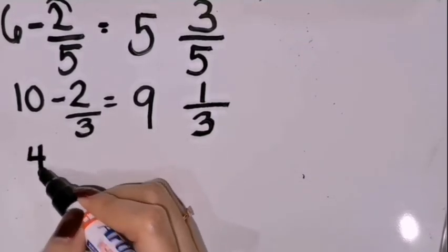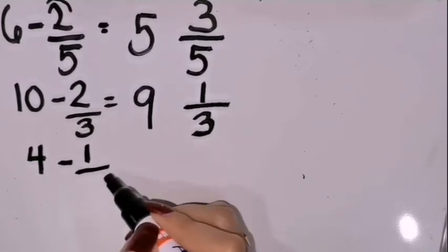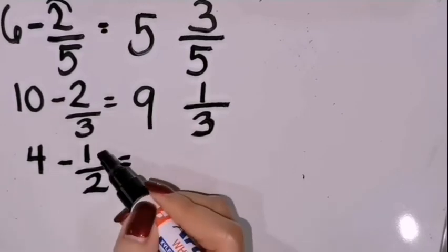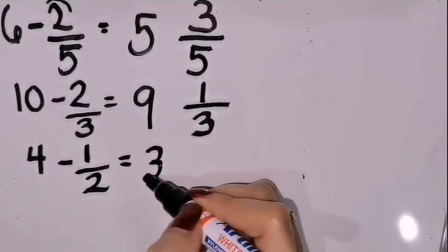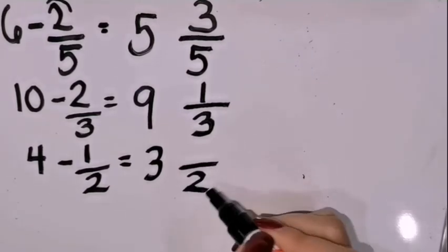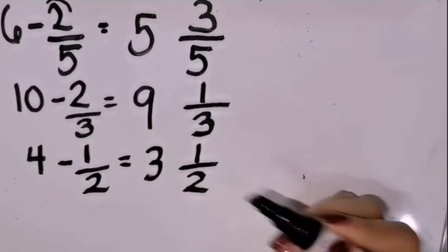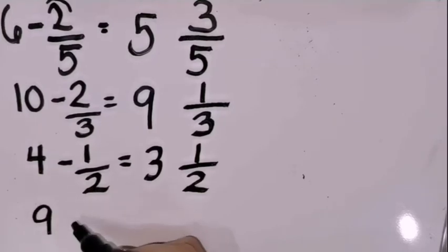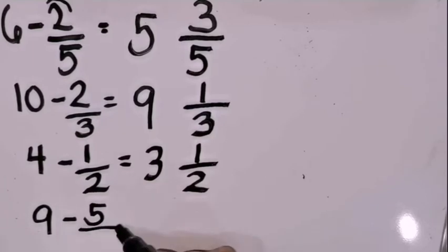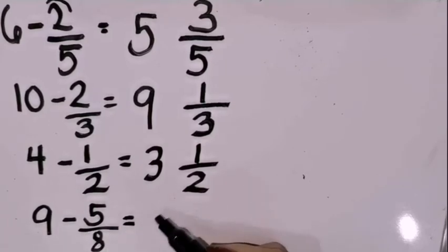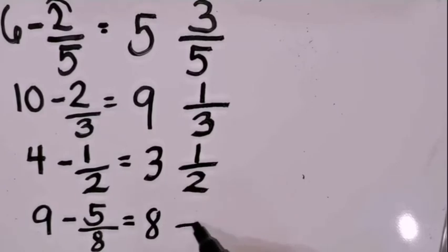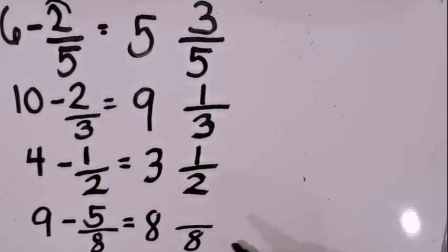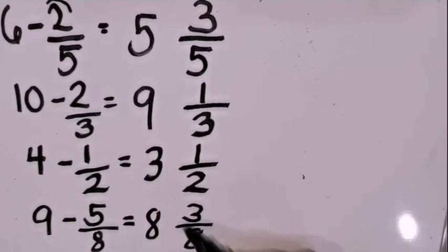Another one: 4 minus 1 half. Again, 4 minus 1 is 3. Copy the denominator, which is 2. Then 2 minus 1 is 1. So the answer is 3 and 1 half. And for the last one: 9 minus 5 eighths. Round off to 1 — 9 minus 1 is 8. Copy the denominator 8, then 8 minus 5 is 3. So the answer is 8 and 3 eighths.